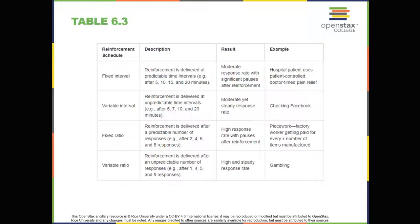Once a behavior is trained, researchers and trainers often turn to another type of reinforcement schedule, partial reinforcement. In partial reinforcement, also referred to as intermittent reinforcement, the person or animal does not get reinforced every time they perform the desired behavior. There are several different types of partial reinforcement schedules, as shown in Table 6.3. These schedules are described as either fixed or variable, and as either interval or ratio. Fixed refers to the number of responses between reinforcements, or the amount of time between reinforcements, which is set and unchanging. Variable refers to the number of responses or amount of time between reinforcements, which varies or changes. Interval means the schedule is based on the time between reinforcements, and ratio means the schedule is based on the number of responses between reinforcements.